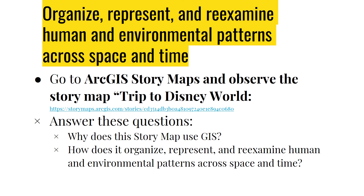Organizing, representing, and reexamining human and environmental patterns across space and time is something that geographers also do. You're going to have an assignment where you go to ArcGIS Story Maps and observe the story map called 'Trip to Disney World.' The link is located in the assignment in Canvas. You will answer questions on a sheet of paper and upload them to Canvas. The questions are: why does this story map use GIS, and how does it organize, represent, and reexamine human and environmental patterns across space and time? A few sentences for each will be sufficient.